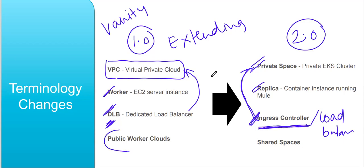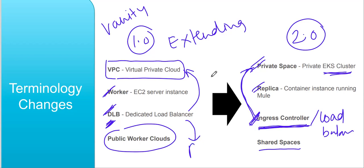In CloudHub 1.0 we have public worker clouds, and in CloudHub 2.0 we have shared space, which also uses an EKS cluster. One more important point: if you use a DLB in 1.0 you need to pay for it, whereas the ingress load balancer in CloudHub 2.0 is free. These are the technology-level changes from 1.0 to 2.0.